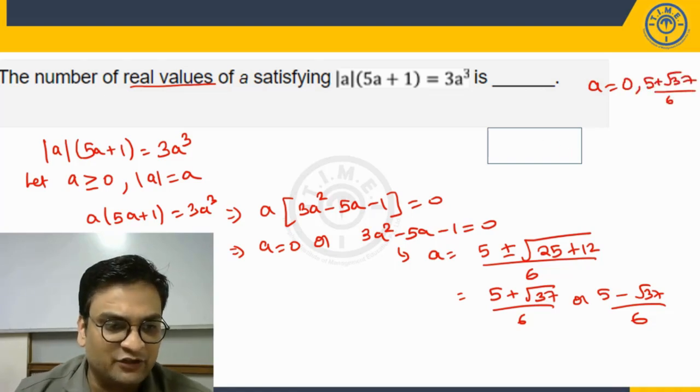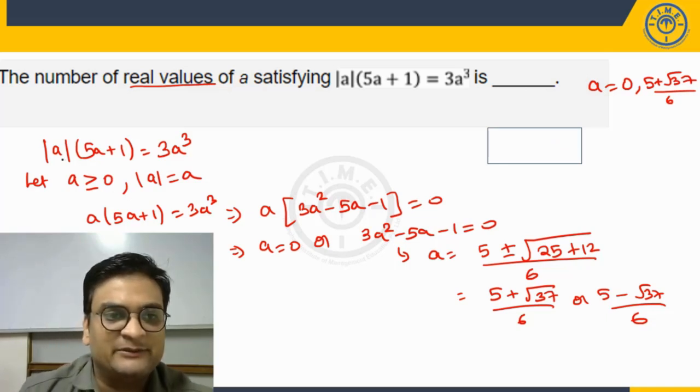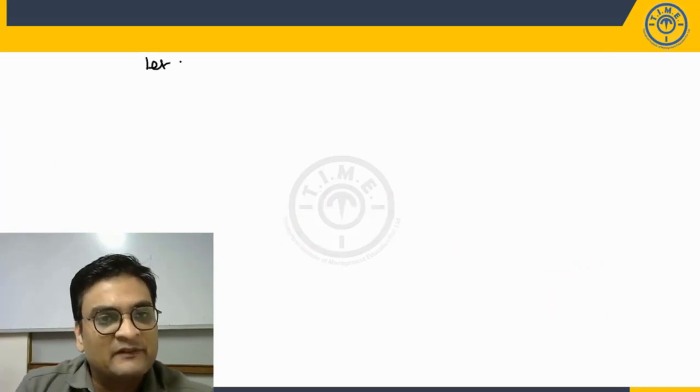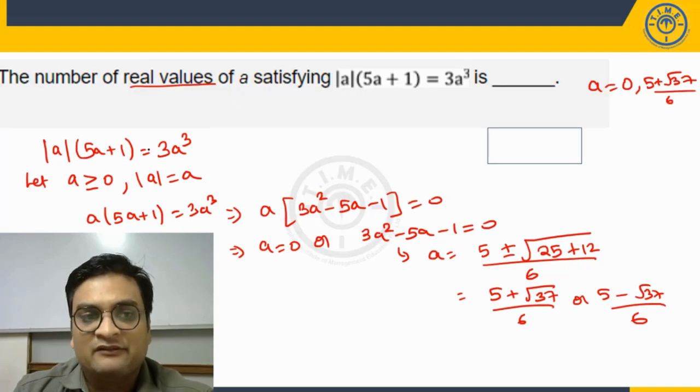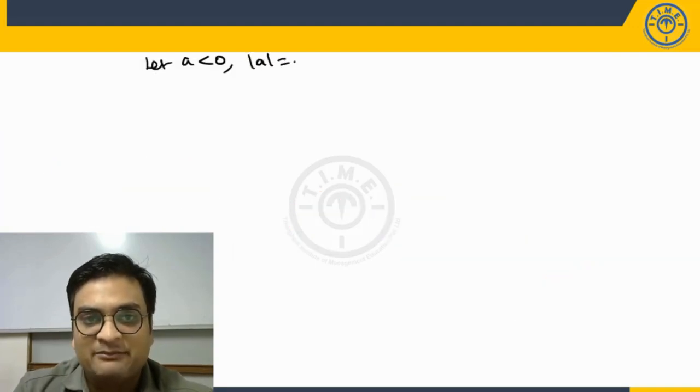But that is not all. We can have one more possibility. The other possibility is a less than 0. So when I take the second case, when a is less than 0, we know mod a will become minus a.